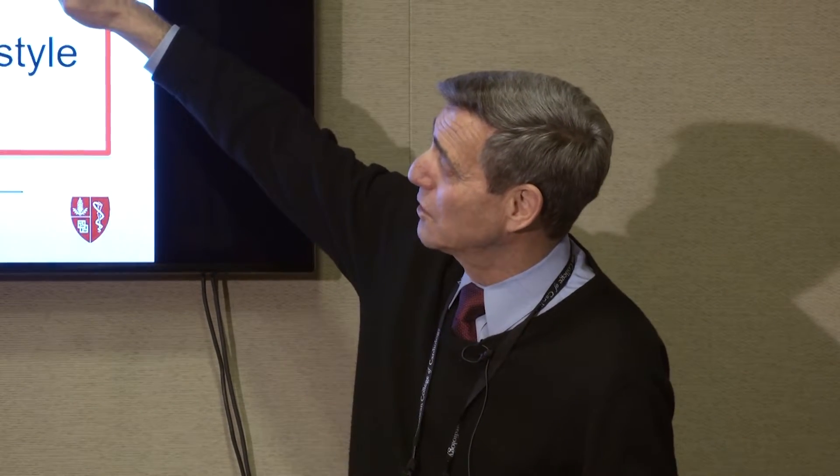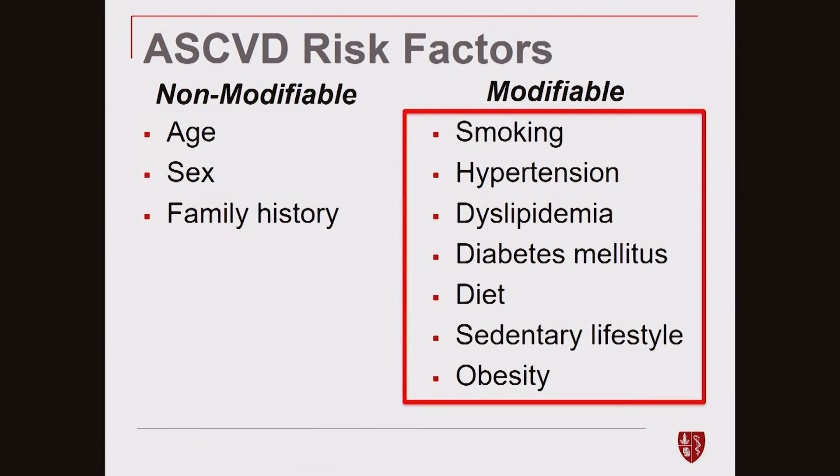Risk factors can be separated into non-modifiable and modifiable. The ones you can't change are your age, sex, and family history. The ones you can change are behaviors like smoking; you can treat high blood pressure, high cholesterol, and triglycerides; you can treat diabetes; you can eat more healthfully; you can be more physically active; and you can lose weight.